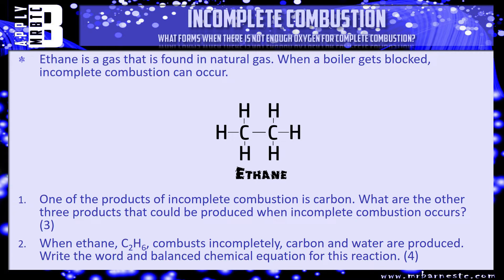Question two: when ethane combusts incompletely, carbon and water are produced. Write the word and balanced chemical equation for this reaction. They've given you the formula of ethane as C2H6. You know it's combusting incompletely, so what does it react with? It doesn't matter that there's not enough oxygen — it's still reacting with oxygen. Have a go at writing the word and symbol equation. Pause the video, have a go, and we'll see how you've done.